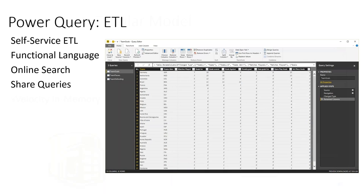Power Pivot is a tabular data modeling engine from Microsoft that works based on an X-Velocity in-memory engine. It's quite fast, is part of Excel, and lets you create measures, hierarchies, and DAX (data analysis expression) code. It's more of a self-service solution, similar in concept to Analysis Services Multidimensional but faster and in-memory.